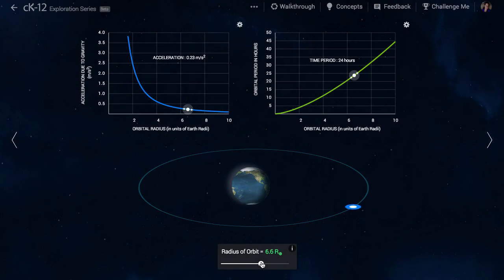There are hundreds of satellites in geosynchronous orbit around the Earth right now. That region of space is getting pretty crowded these days.